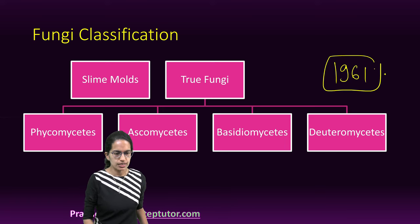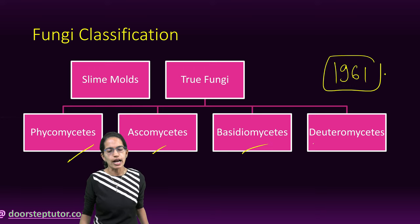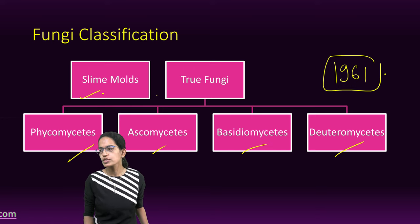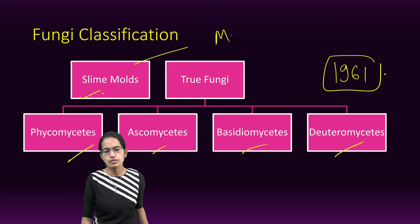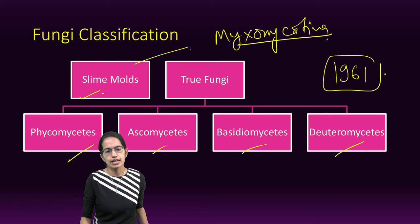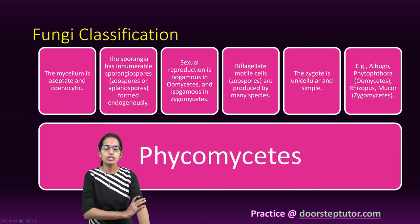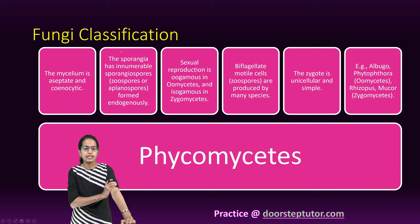Based on this classification, let's talk about each of these true fungi one by one. Slime molds are the most primitive ones. They are also known as Myxomycotina and they are called as the slime molds or the false fungi.